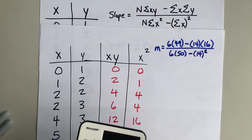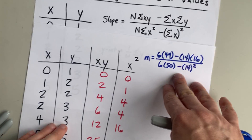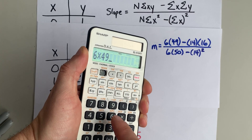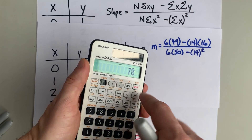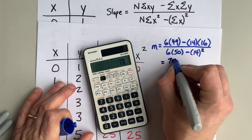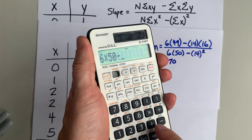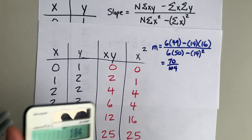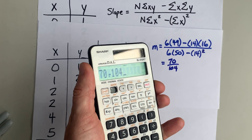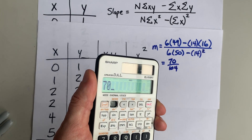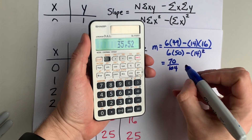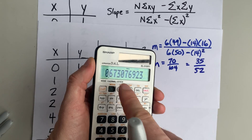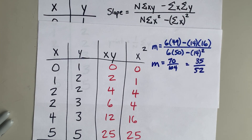This calls for a calculator — by hand just means I'm not using a spreadsheet program to get the line of best fit. 6 times 49 minus 14 times 16 gives 70 for the numerator. 6 times 50 minus 14 squared gives 104 for the denominator. 70 over 104 reduces to 35 over 52, which is my slope — or about 0.67 if you prefer.